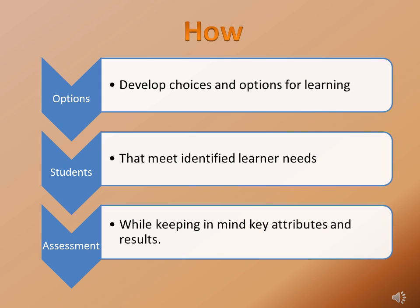Once a decision is made about what will be differentiated and for whom, we then need to decide how we will do that. First, develop choices and options for learning that meet identified learner needs, and keep in mind the key attributes and results that are expected.